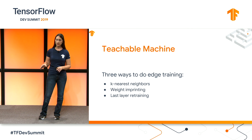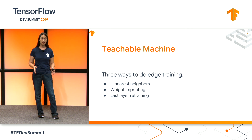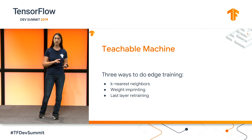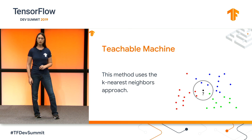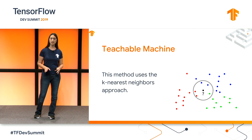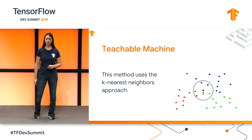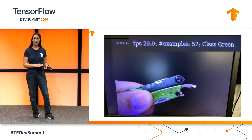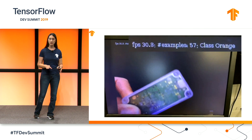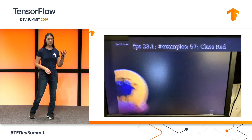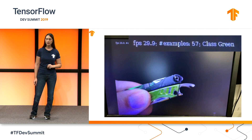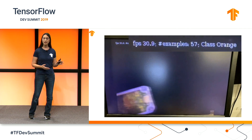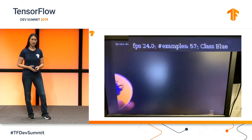This teachable machine shows off a form of edge training. Traditionally there are three ways to do edge training: k-nearest neighbors, weight imprinting, and last layer retraining. For this demo, we're using the k-nearest neighbors approach. In this animated GIF you can see the TPU enables very high classification rates — the frame rate shown is the rate at which the TPU is classifying images. In this case we're getting about 30 frames per second, which is essentially real-time classification.